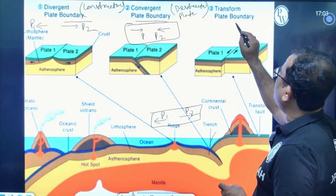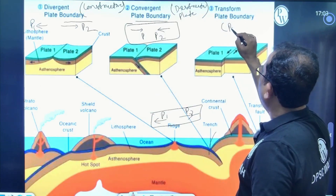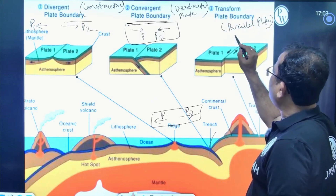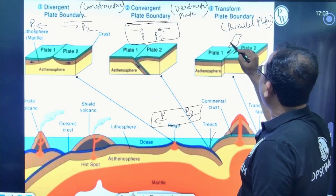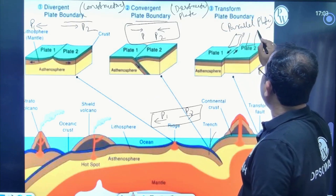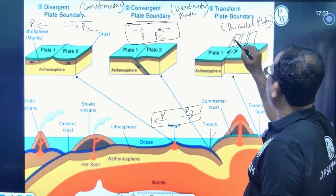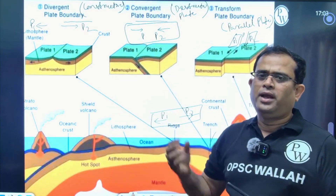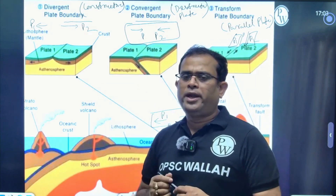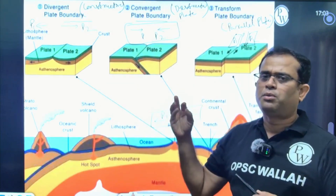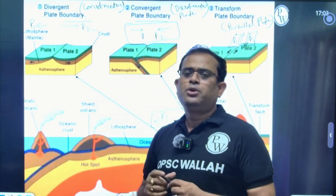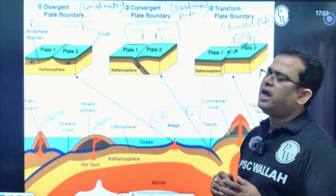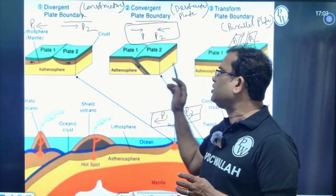Transform and parallel plate motion — plates side-pass each other. Plate 1 and Plate 2 side-pass each other. All of these are types of plate motion. They are comparatively very small compared to your divergent or convergent plate boundaries.